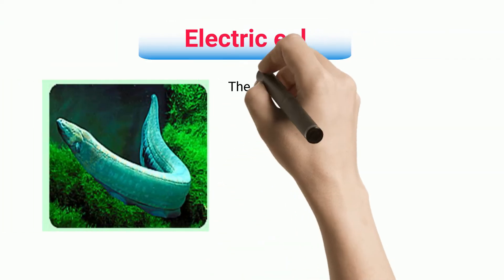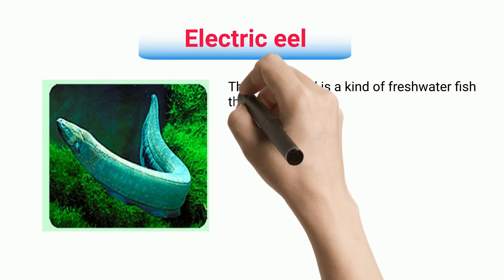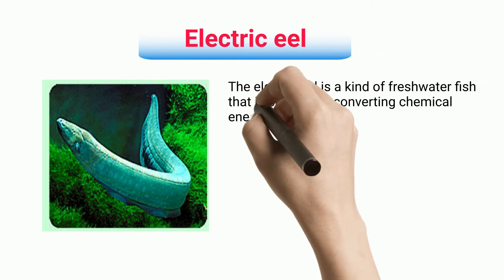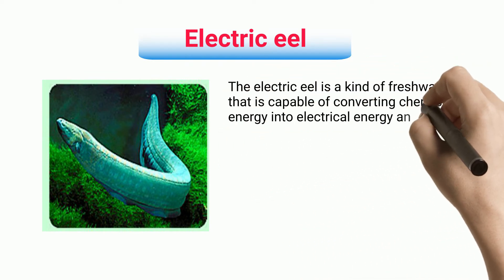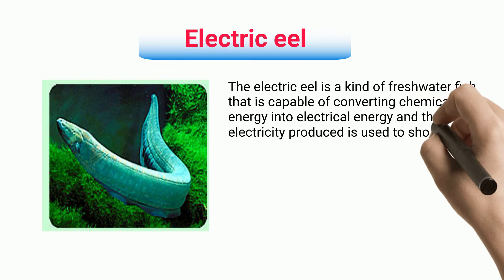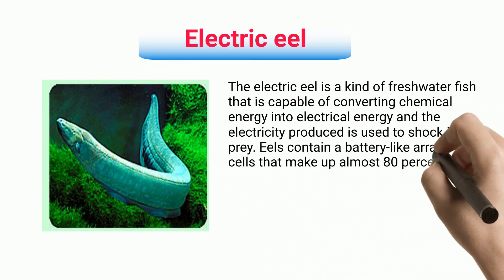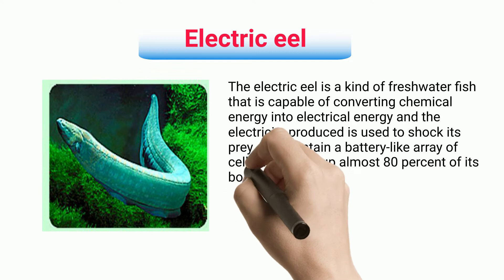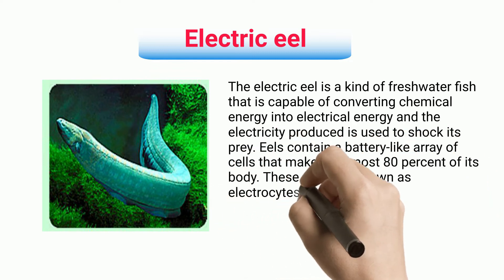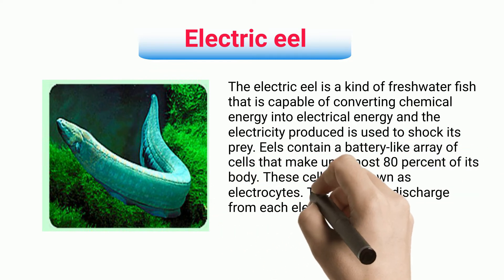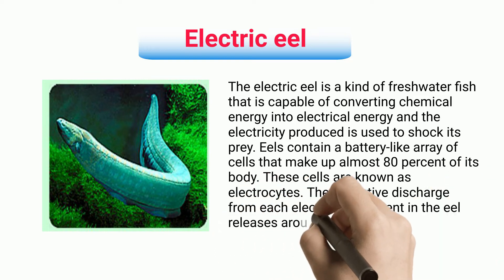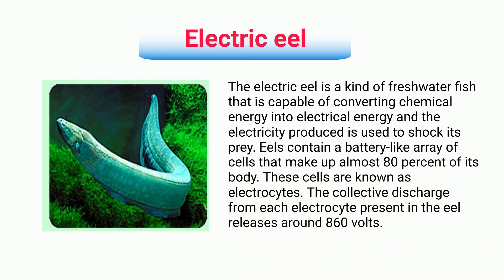The electric eel is a kind of freshwater fish that is capable of converting chemical energy into electrical energy, and the electricity produced is used to shock its prey. Eels contain a battery-like array of cells that make up almost 80% of its body. These cells are known as electrocytes. The collective discharge from each electrocyte present in the eel releases around 860 volts.